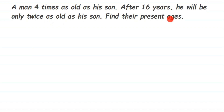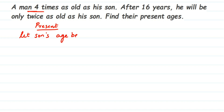So first we're going to consider the present age. At the present time, the relationship between the man and his son is given. Since the man's age is based on his son's age, we find the son's age first. Let the son's age be x. Then the man's age will be four times x, which is 4x. So the father's age is 4x and the son's age is x.